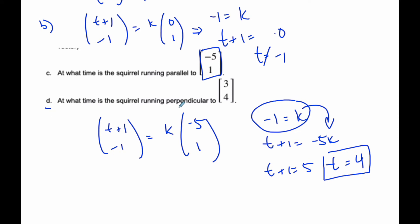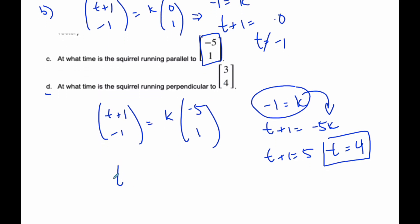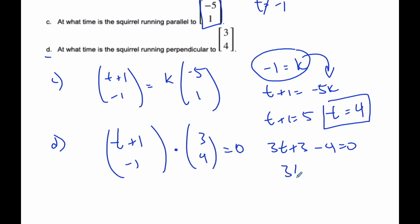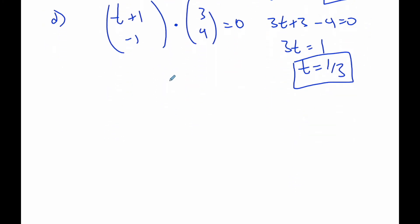Part d says, when is it running perpendicular to (3, 4)? Well, if I'm going to be perpendicular to (3, 4), then I know that the dot product, or scalar product, when I do this, it has to be 0. And so I can say, 3t plus 3, when I multiply the top, plus the multiplication of the bottom equals 0. And so I know 3t is equal to 1, and so t is equal to 1 third. So at 1 third of a second, my squirrel is running perpendicular to this particular vector here.